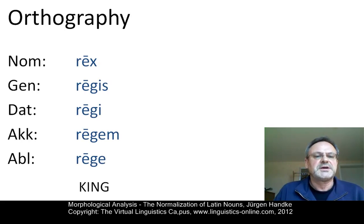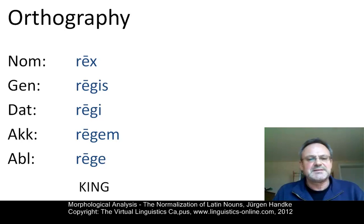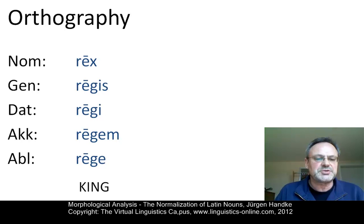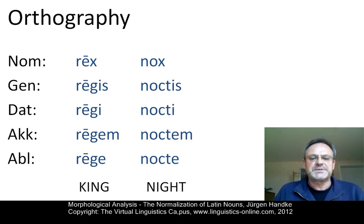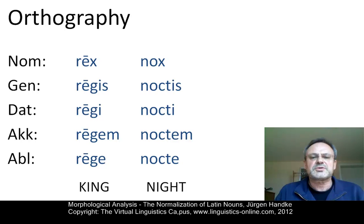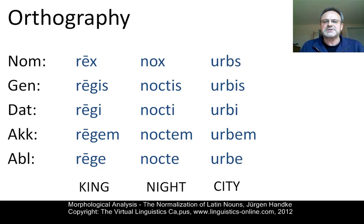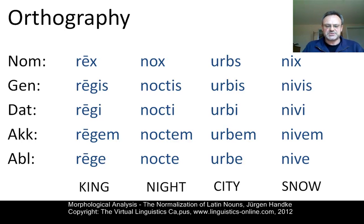Here are the examples. The first is the Latin equivalent of 'king' in the nominative, genitive, dative, accusative and ablative case. The next is the Latin equivalent of English 'knight': nox, noctis, etc. Then we have the equivalent of 'city': urbs, urbis, etc. And finally, here is the Latin paradigm for 'snow': nix, niwis and so on.